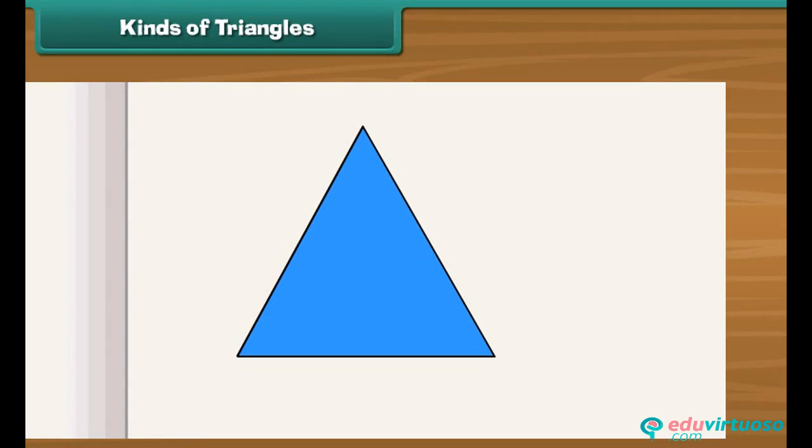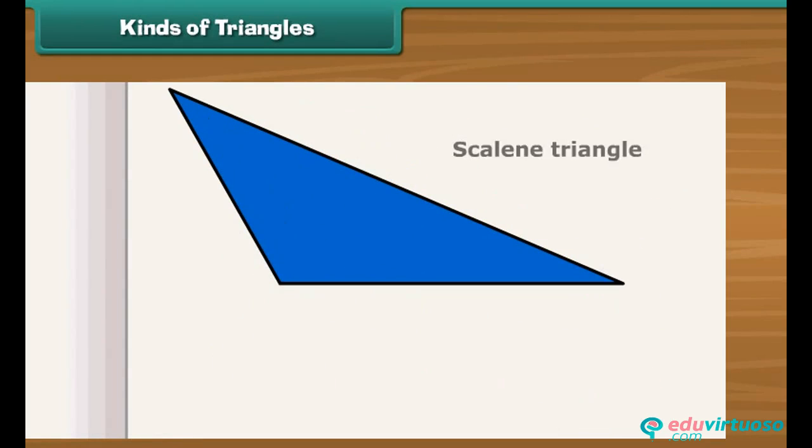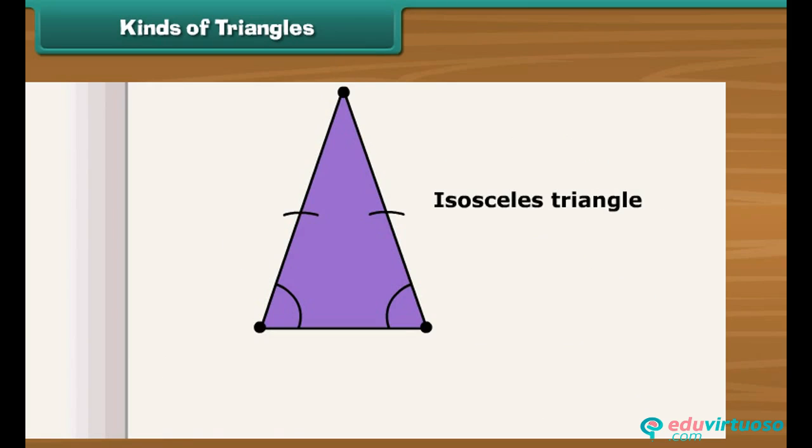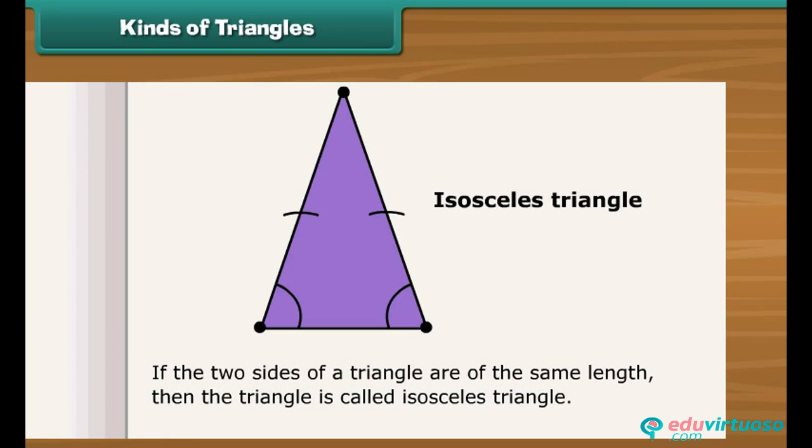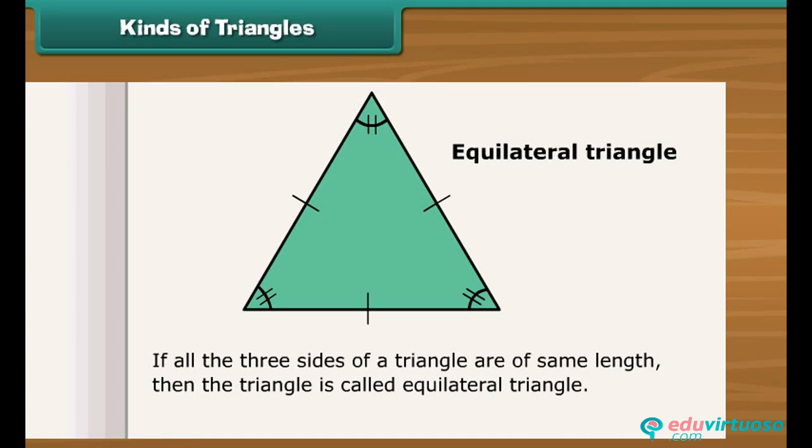The triangles can be classified into three types depending upon the number of equal sides that they contain. If all the three sides of a triangle are of different length, then the triangle is called scalene triangle. If the two sides of a triangle are of the same length, then the triangle is called isosceles triangle. If all the three sides of a triangle are of same length, then the triangle is called equilateral triangle.